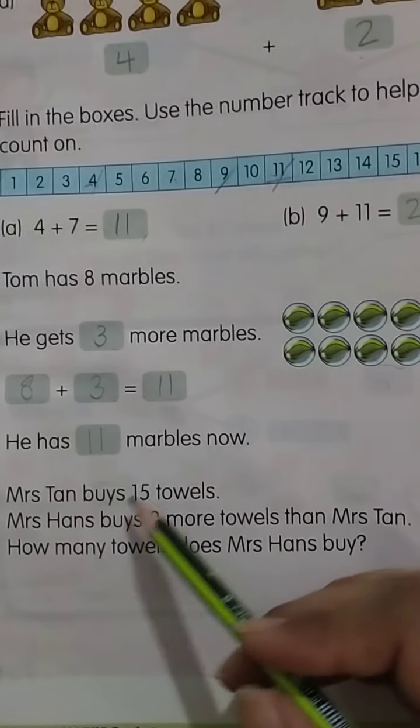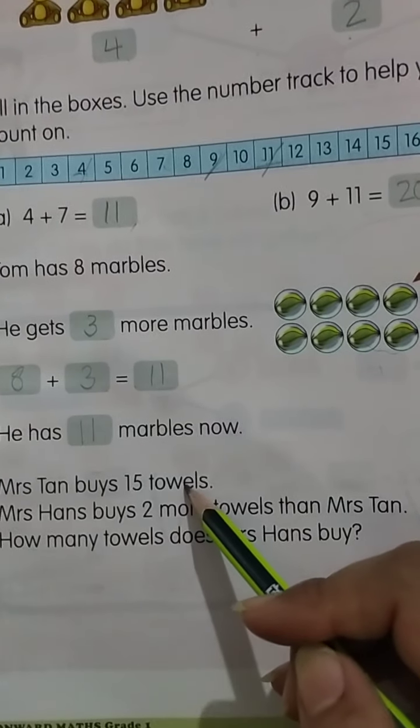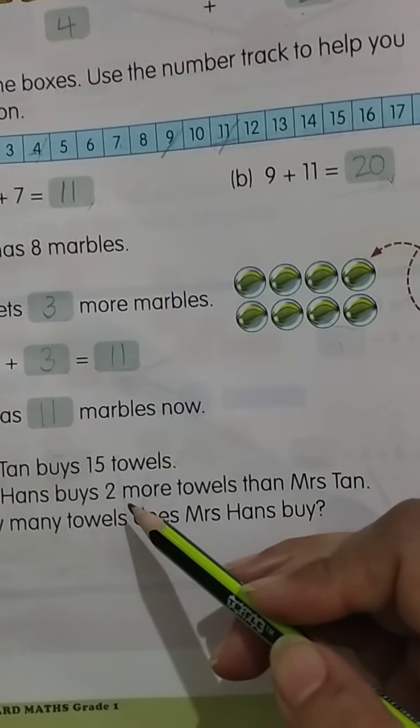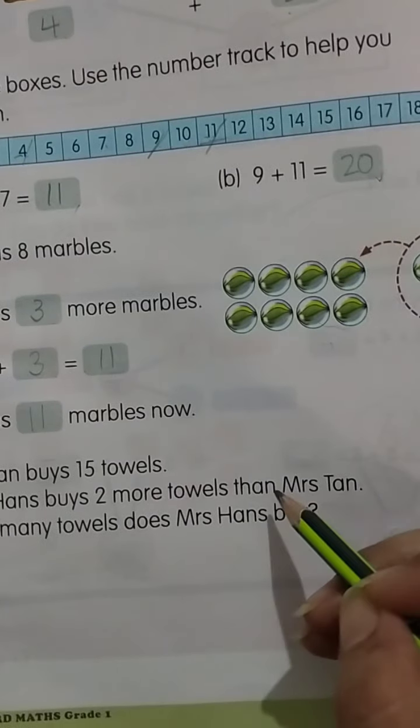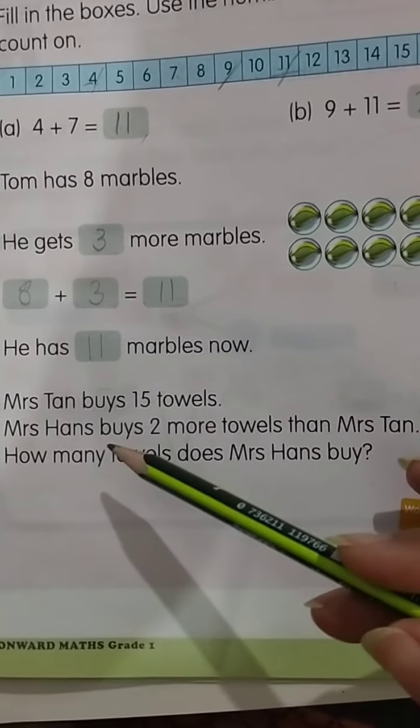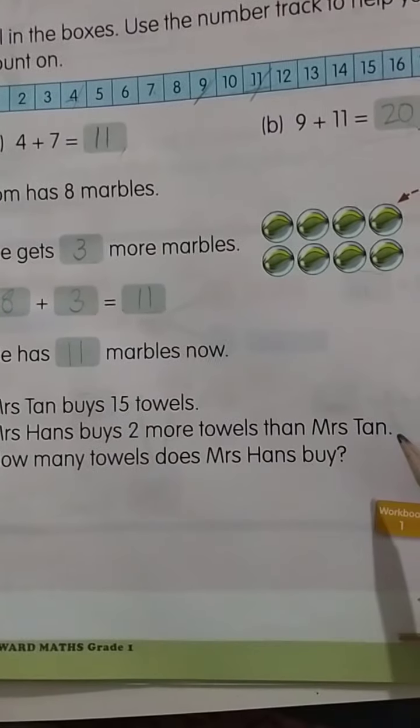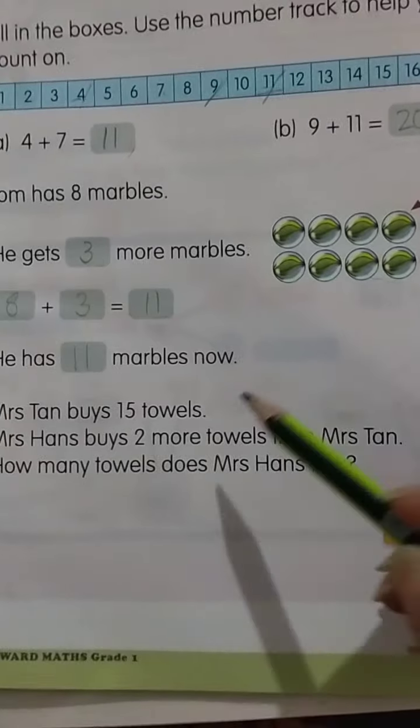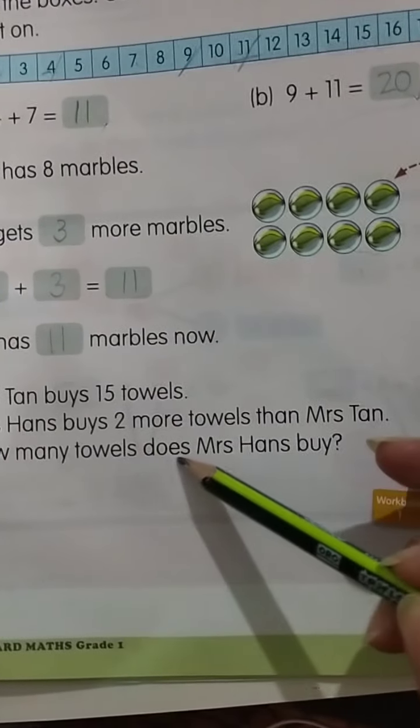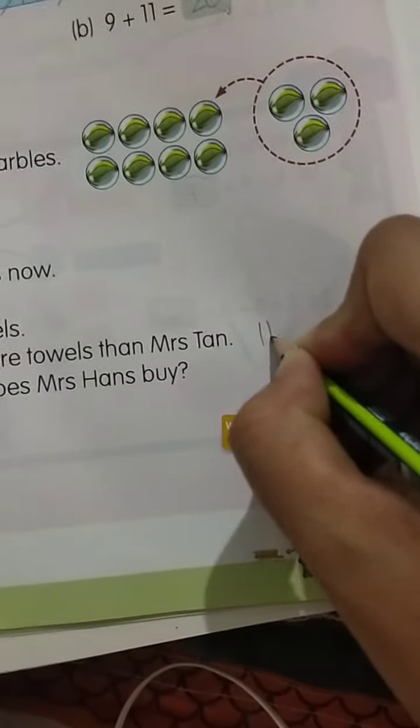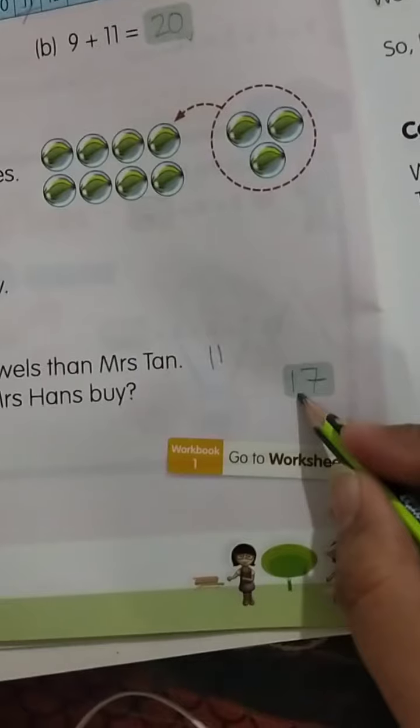Mrs. Tan buys 15 towels. Mrs. Hans buys 2 more towels than Mrs. Tan. انہوں نے بتایا ہے Mrs. Tan نے 15 towels خریدے. Mrs. Hans نے 2 ان سے زیادہ خریدے ہیں. تو وہ آپ نے 2, 15 میں add کرنے ہیں. 15 میں 2 add کرنے ہیں تو کتنے ہو جائیں گے? How many towels does Mrs. Hans buy? 15 میں 2 add کرنے, 16, 17. Your answer will be 17.